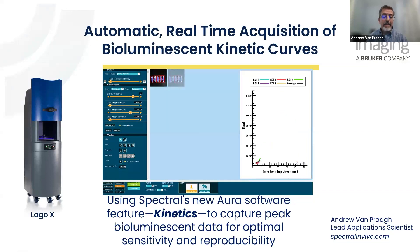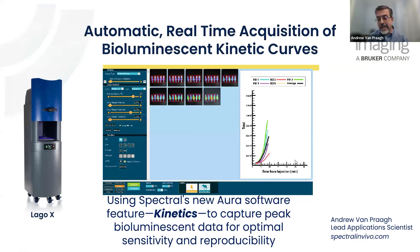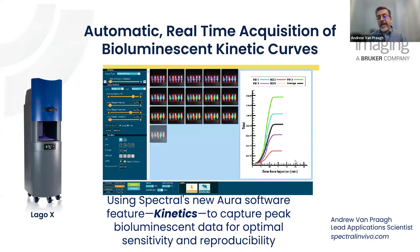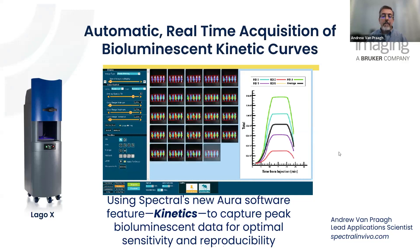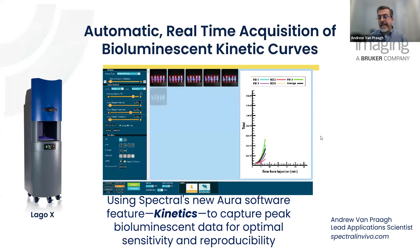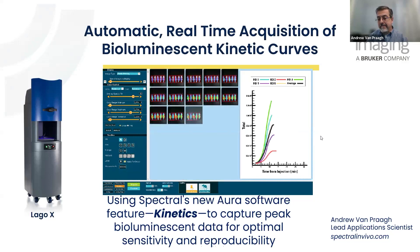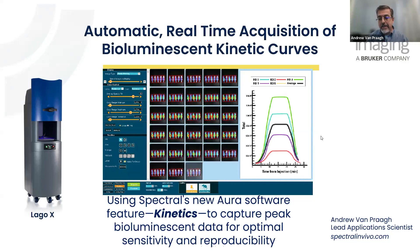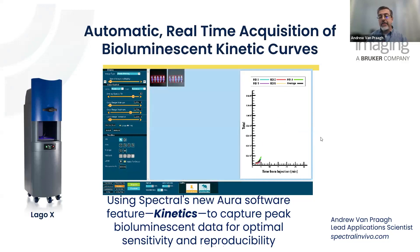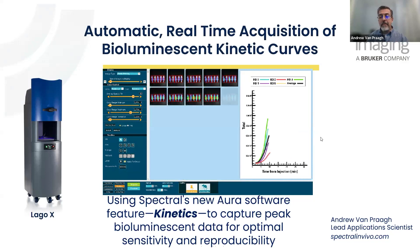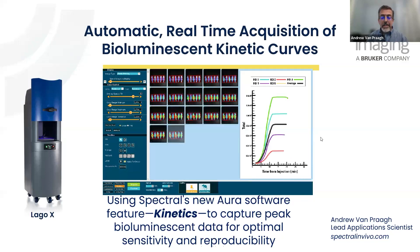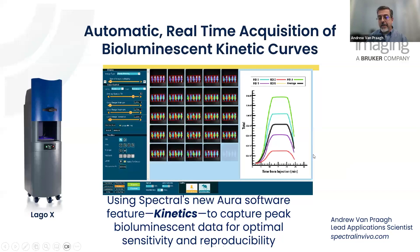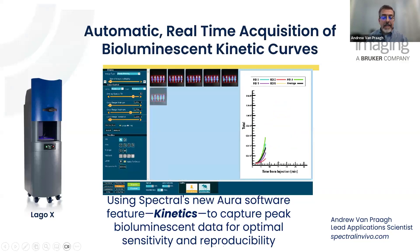This is exactly what kinetics focuses on. It focuses on the automatic acquisition of the data needed to construct a bioluminescent kinetic curve for your mouse model system, and it will provide a live graph as this data is acquired. At the end of acquisition, it will give you a summary table of all of the data acquired, so that knowing when peak occurs, you can extract the data that you need.